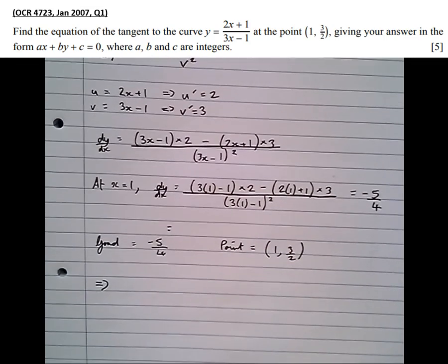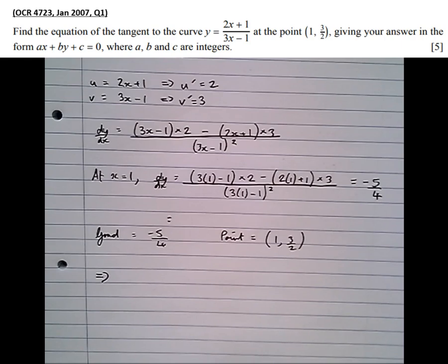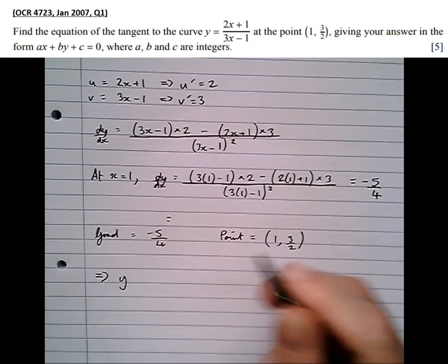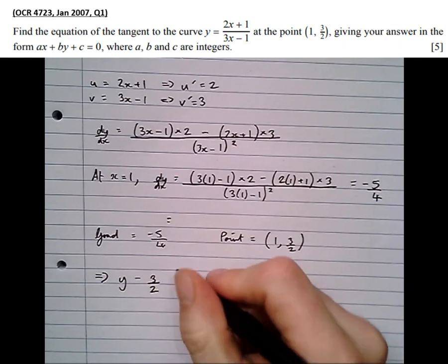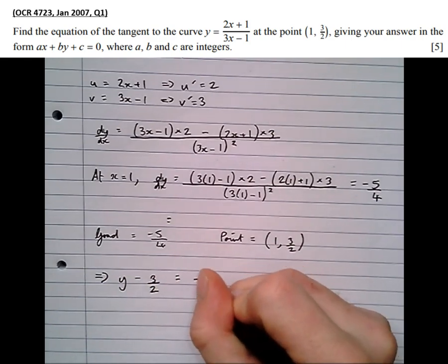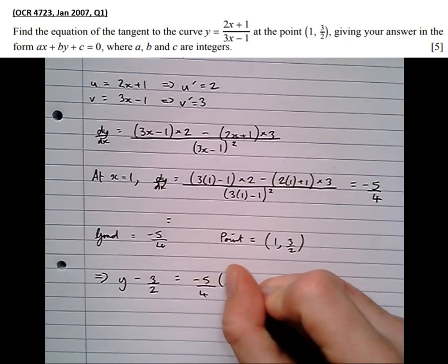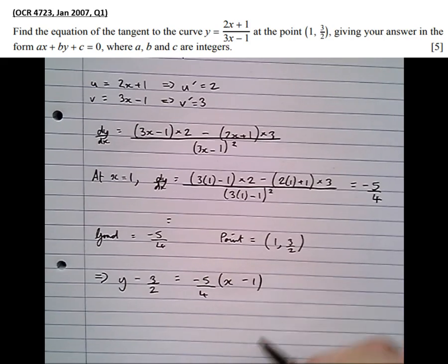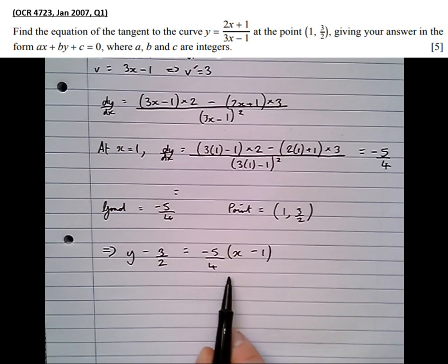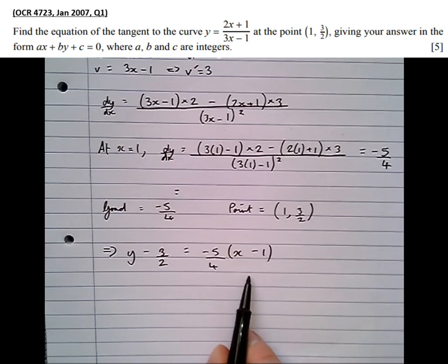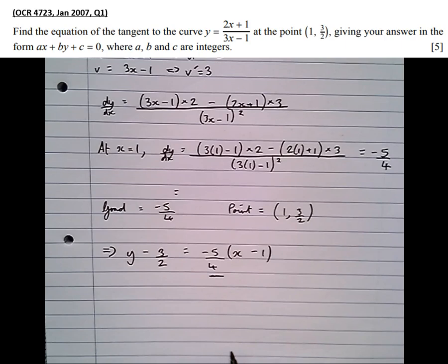So putting that into the y minus y1 equals m(x minus x1) formula, we get y minus y1 equals the gradient times (x minus the x-coordinate). Now, at this point, I can see that minus 5 quarters, when I multiply this out, is going to cause problems. So I'm going to times everything at this point by 4.